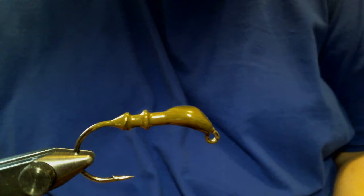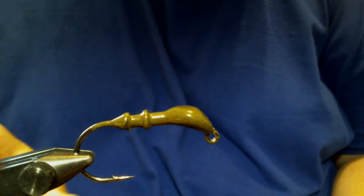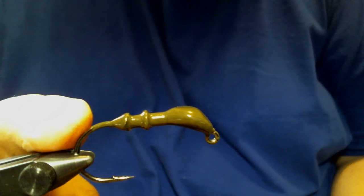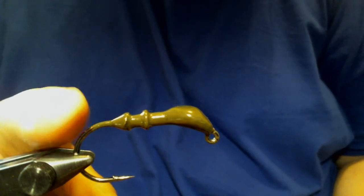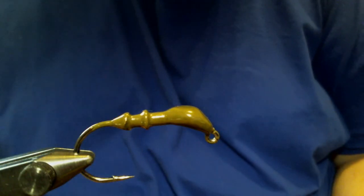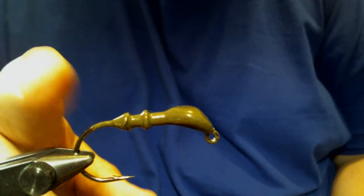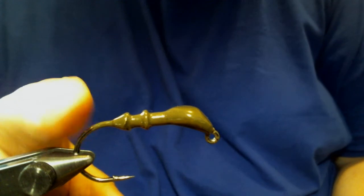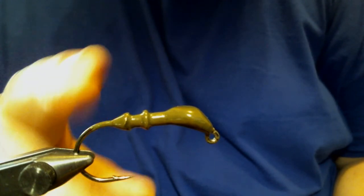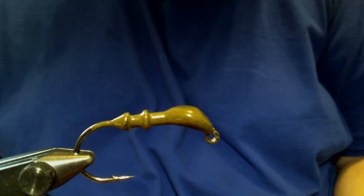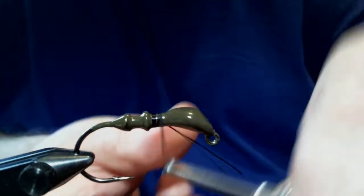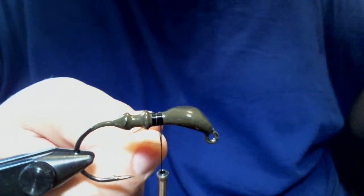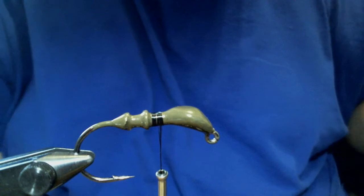We're going to get started here. In the vise, we have a quarter ounce Arky-style jig with a 2-aught VMC 7161 60-degree jig hook. You could use a 3-aught or a 4-aught. You can make this 3/8, half ounce, whatever. I like it with the 2-aught in this jig because it keeps it a compact profile. This is going to be the size of the craws that our bass really go after this time of year. Let's get started with some black 210 denier flat wax nylon thread. Danville is the one I like to use. Feel free to use whatever you like.